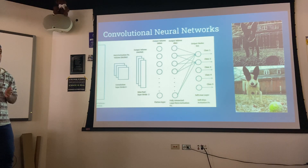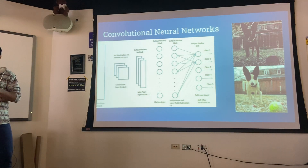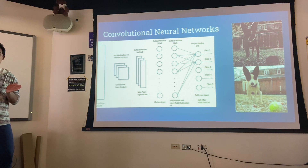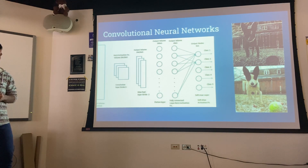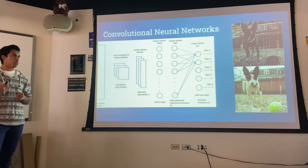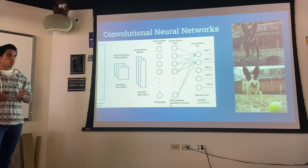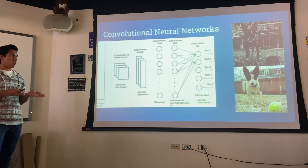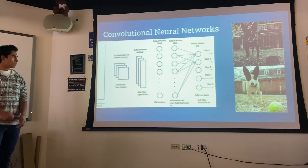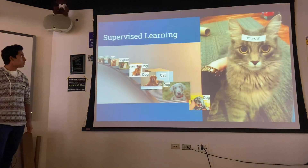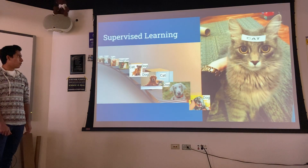It tries to find patterns in those pixels, and the next layer finds patterns in the patterns. So when we get to the output layer, it uses all these patterns to figure out whether the image is a cat or a dog.